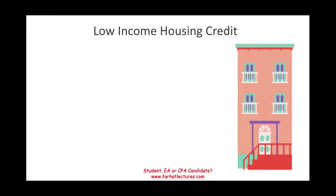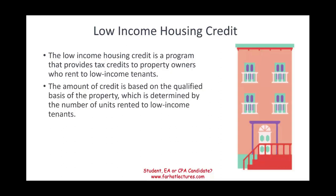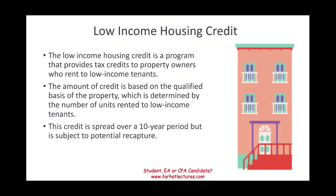Starting with the low income housing credit. Just as the name suggests, it's designed to encourage individuals to provide property to low income tenants. Congress wants to address the homelessness issue, so if you have a housing unit and you're willing to rent it to low income tenants, you'll receive a credit. The credit is based on the qualified basis of the property, determined by the number of units rented to low income tenants — the more units, the higher the credit. The credit is spread over a 10-year period but is subject to potential recapture.